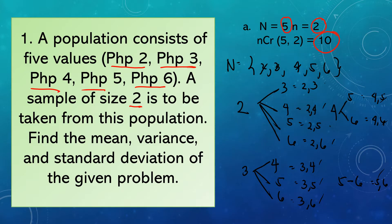We've reached the required ten samples from Step A. If you only got nine, that means you're missing a partner. You need to find what's missing. After that, we list down all the samples and find the mean.